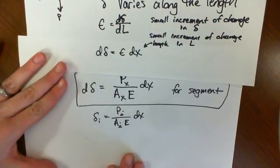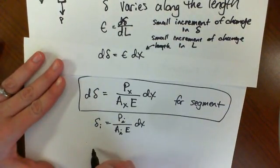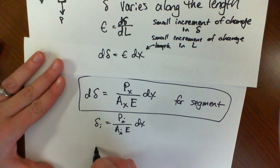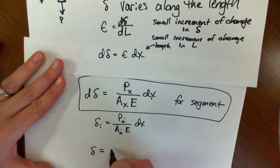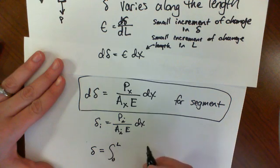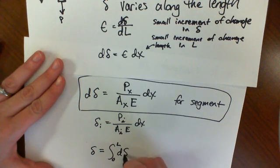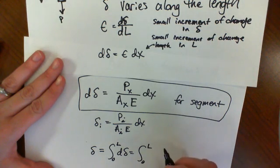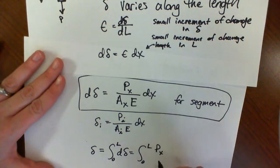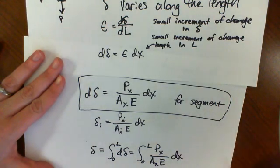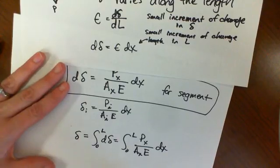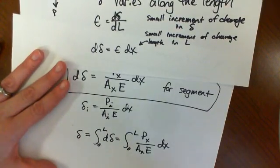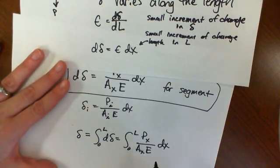So I integrate both sides. So this is what it looks like. I just do the integration of both sides. I integrate from 0 to L, which is my overall length, P(x) over A(x)E times dx.